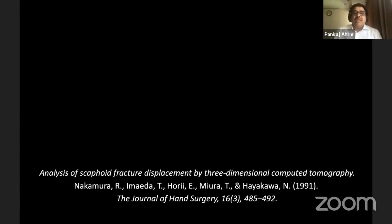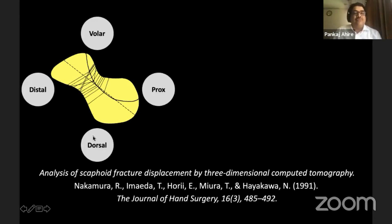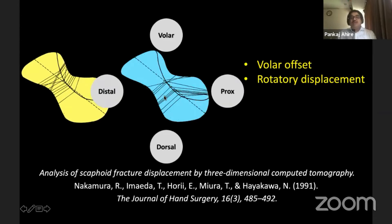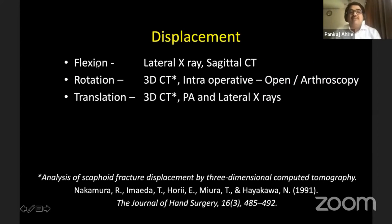When this area was studied by CT scan in a paper by Dr. Nakamura, there were some interesting findings. When the fracture lines happened in the distal third of the waist fracture, we had a volar offset or volar translation and a rotatory displacement. Whereas when the fracture lines were in the proximal third of the waist, we had a humpback deformity. So these are the three deformities: flexion as in the humpback deformity, rotation as in the rotatory deformity, and translation as in the volar offset.